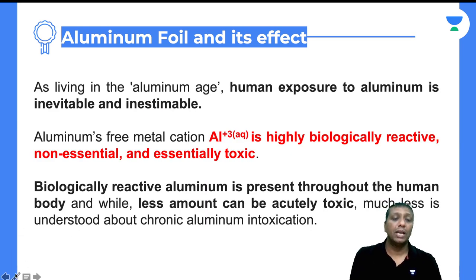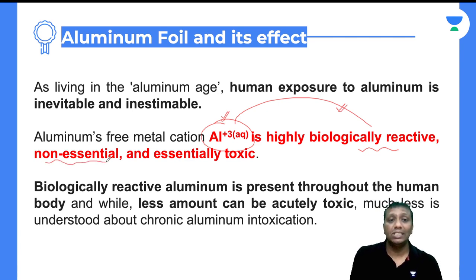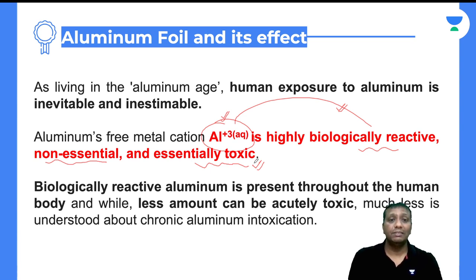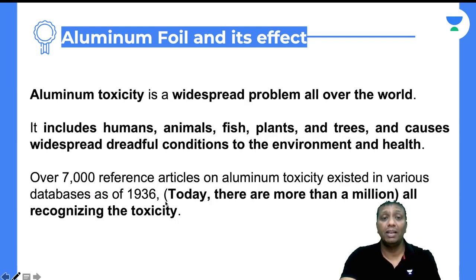However, excess aluminium creates problems. Aluminium exists as a metal cation with a 3+ charge (Al³⁺), which makes it highly biologically reactive. When it enters your body it is non-essential — meaning it is not required — but it becomes increasingly toxic. When biologically reactive aluminium is present throughout the human body, even in lesser amounts it can be acutely toxic to the human body.